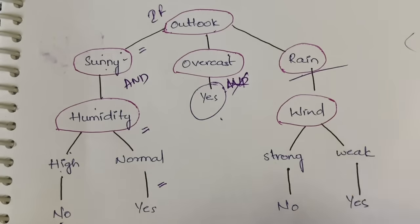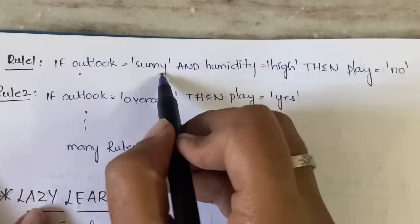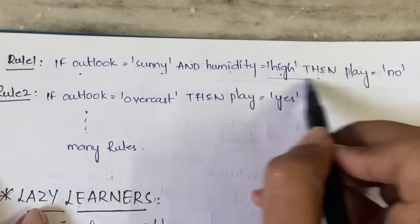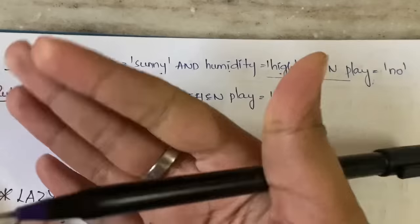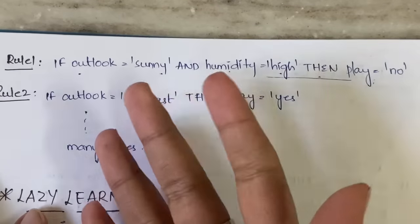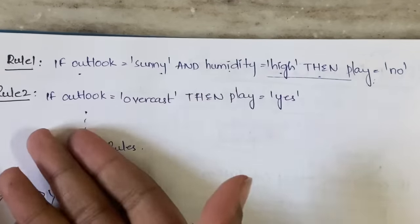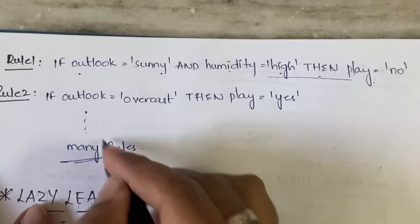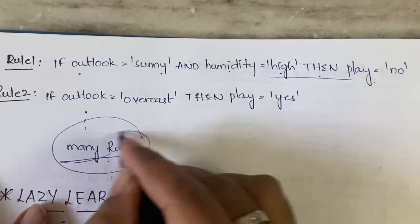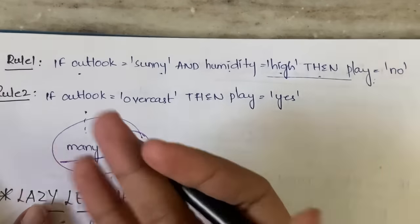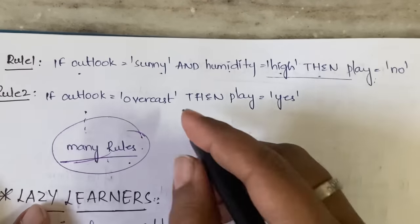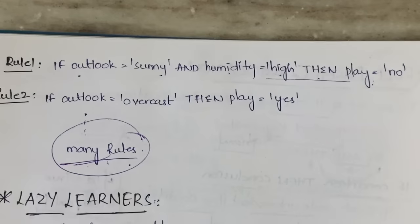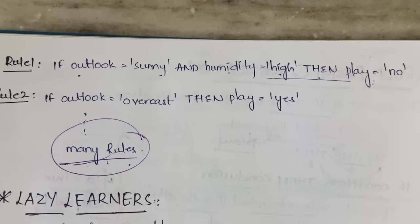You can extract all such conditions from the decision tree. Based on the decision tree we have drawn, we extract the rules, and so on — as many rules as are possible with the tree. That's all about rule-based classification.